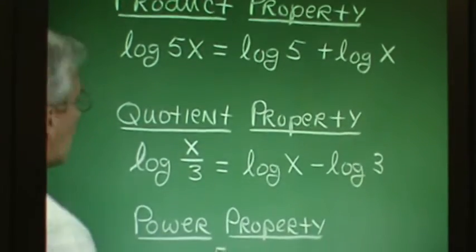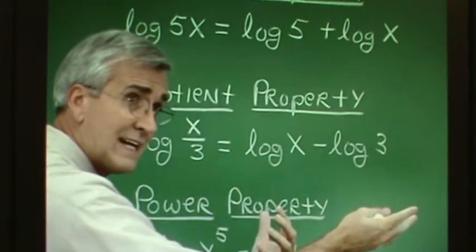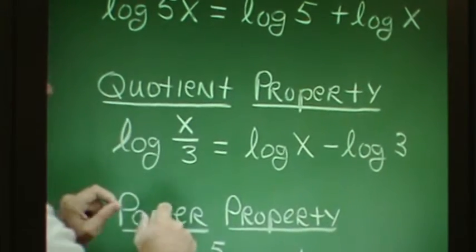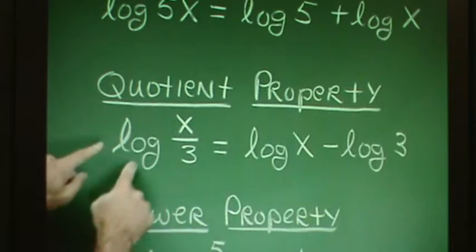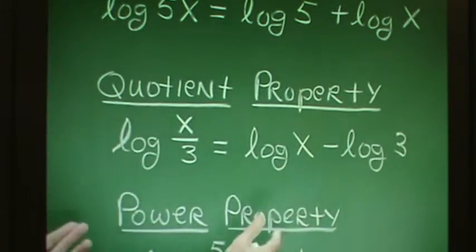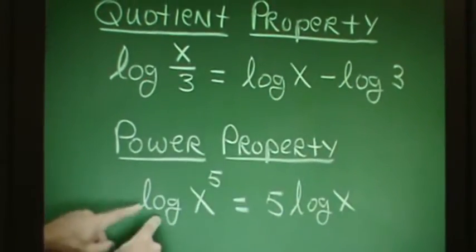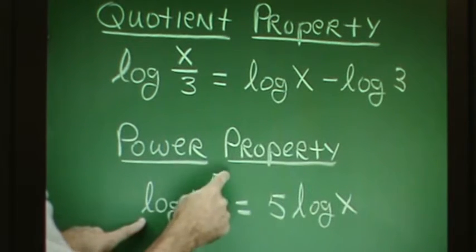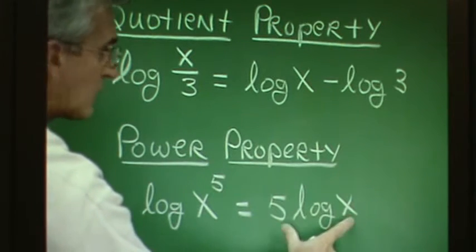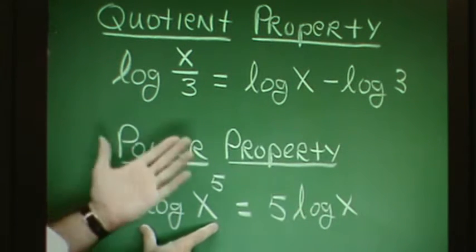The quotient property works like this: when dividing with like bases, we subtract the exponents. When we take the logarithm of a quotient, it is the difference of logarithms — the log of the numerator minus the log of the denominator. For the power property, related to raising a power to a power where we multiply exponents: the log of x to the fifth power can be written as 5 times log x. And we can go the other way — 5 log x is the log of x to the fifth power.